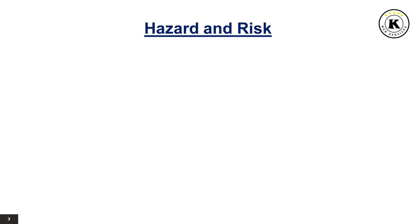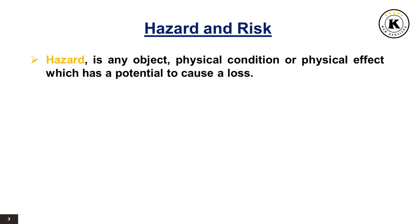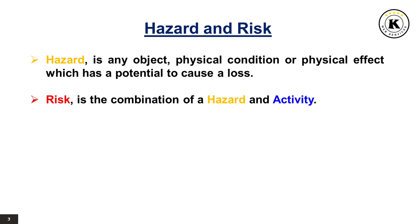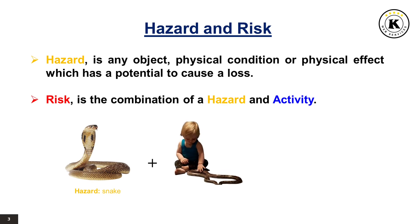Hazard and Risk. A hazard is any object, physical condition, or physical effect which has a potential to cause a loss. The risk is the combination of a hazard and activity. For example, a snake is a hazard. When combined with the activity of playing with the snake, it will create the risk of a snake bite.